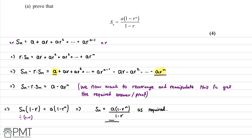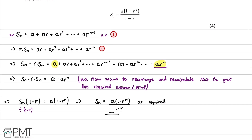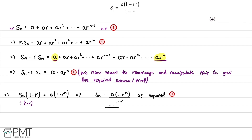We pick up marks as follows: the first mark is for writing out the sum of terms in full; the second mark is for knowing to multiply Sn by r, which was the key step; the third mark is for simplifying to get Sn minus r times Sn equal to a minus ar to the power of n by cancelling terms; and the fourth and final mark is for concluding with the correct answer.